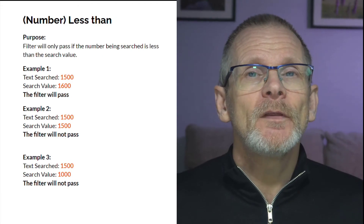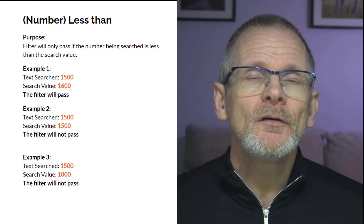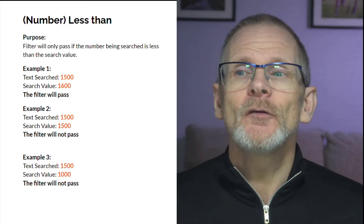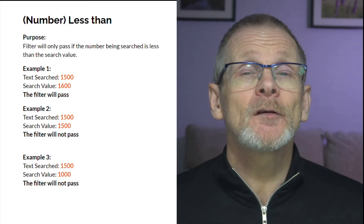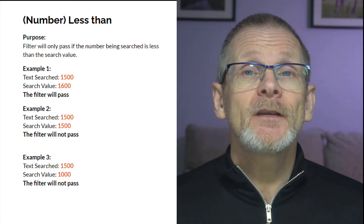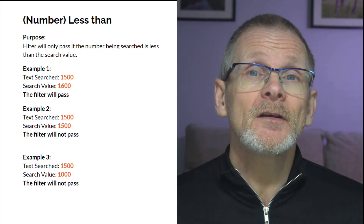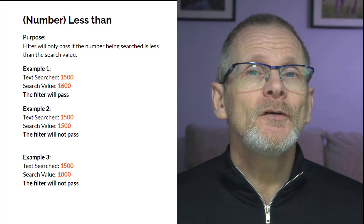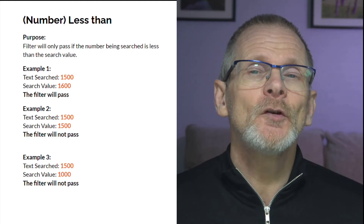'Number less than' — the Zap will only continue if the number is less than the one used in our search term. With 1500 as our value and a search of 1600, the filter will pass. Using 1500 as the search value would not pass because it's exactly the same and it needs to be strictly less than. Similarly, using 1000 as the search value the filter would not pass.